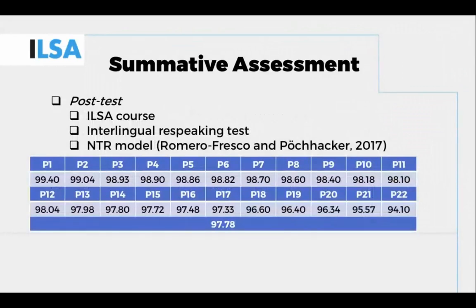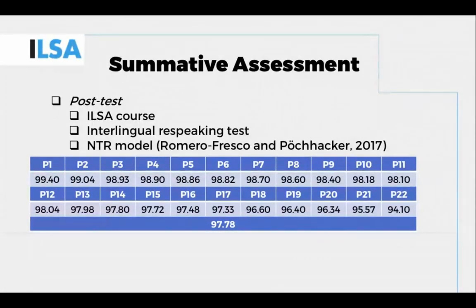Thanks Hayley. Once the suitable course material had been included in the ILSA course, 22 MA students participated in a post-test. They completed an interlingual re-speaking test, Spanish-English, and their performance was assessed with the NTR model. Accuracy rates ranged from 94.1%, which is a 0 out of 10, to 99.4%, which is an 8 out of 10.